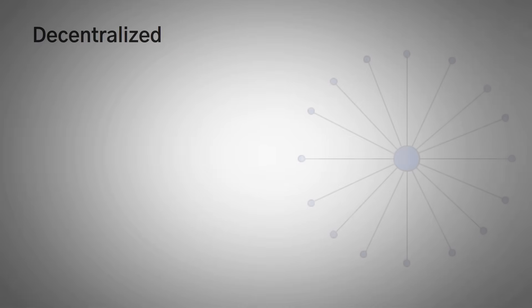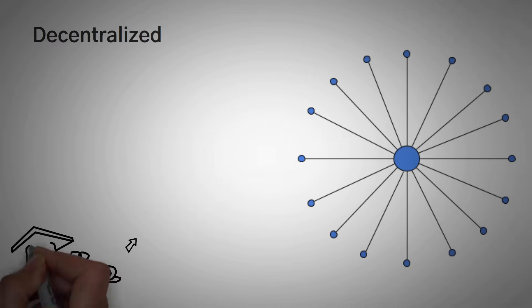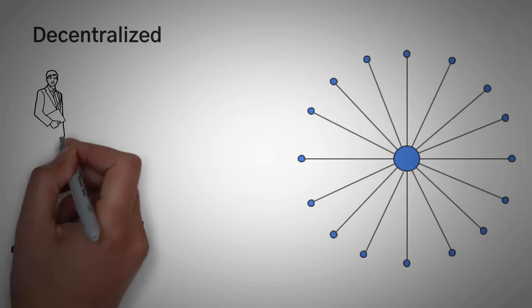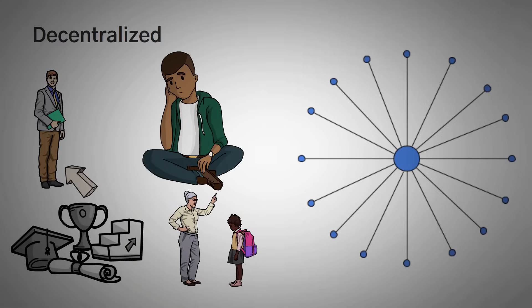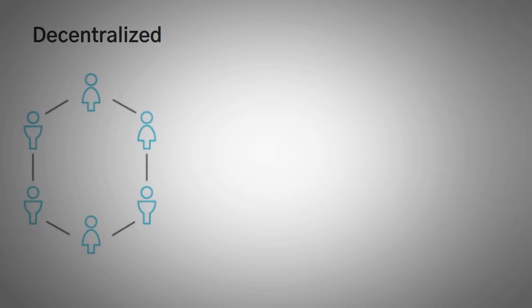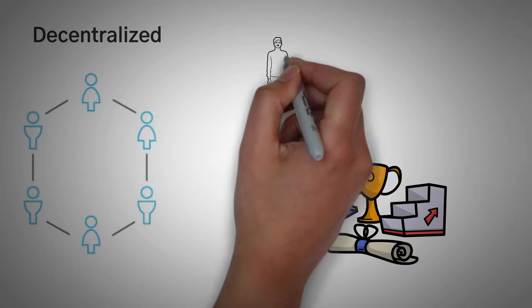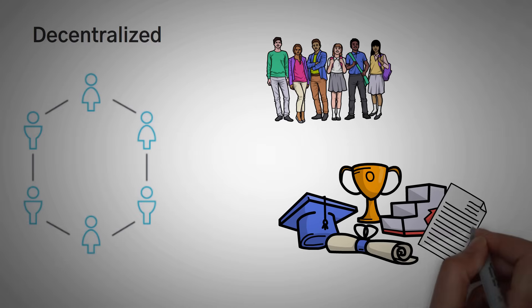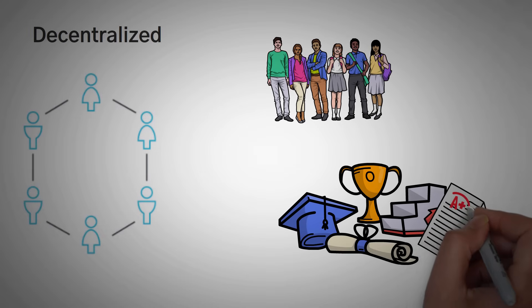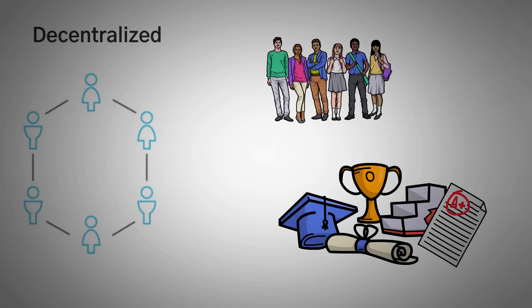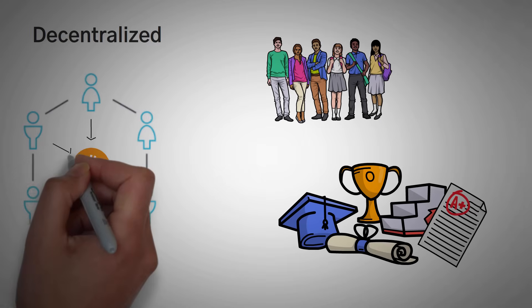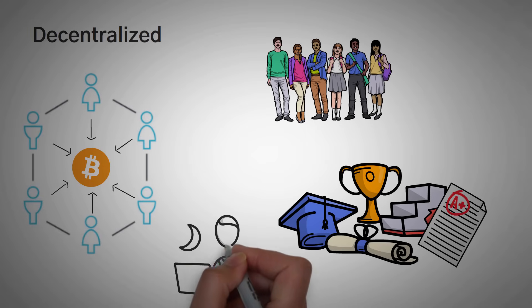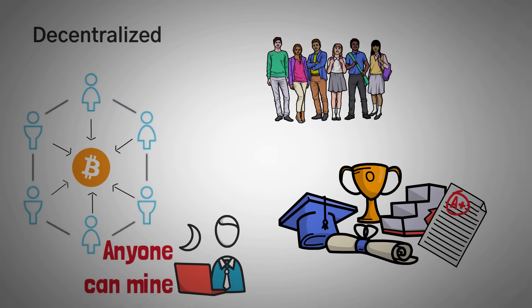The next thing to know about a blockchain is that it is decentralized. Centralized means one person controls it — for example, your grades in high school, where only your teacher had access to add or change your grades. Decentralized means that more than one person can have access to look at and change the records. Imagine if all of your classmates were allowed to look at the answers and give you a grade based on your papers and tests — they could vote on what grade you got. Instead of one person having a list of all the Bitcoin transactions, literally anyone who wants to can have them and look at them. Anyone can mine and actually vote on the blockchain.